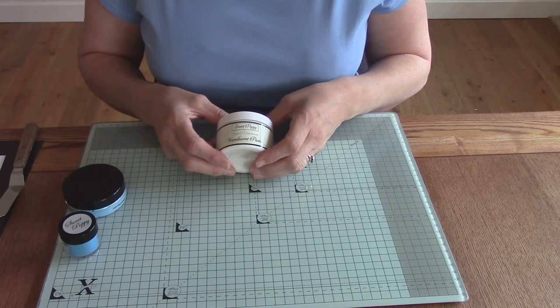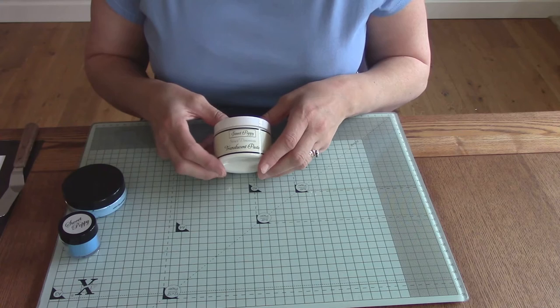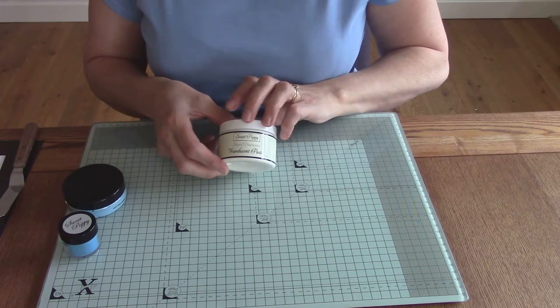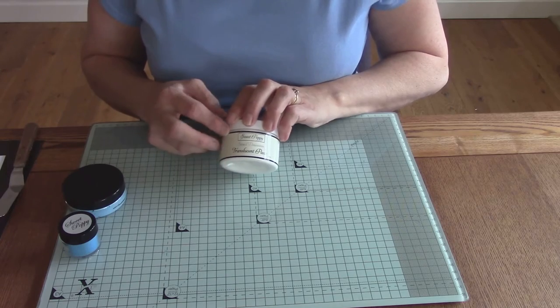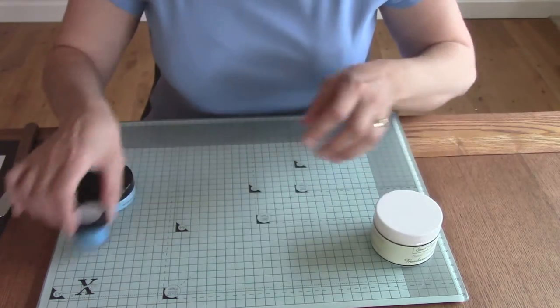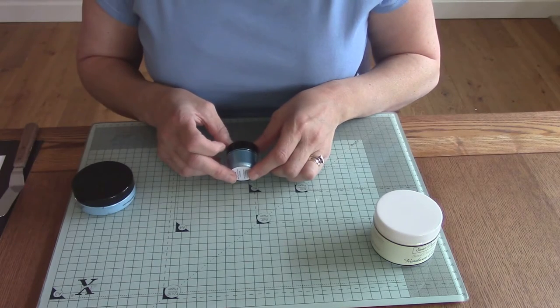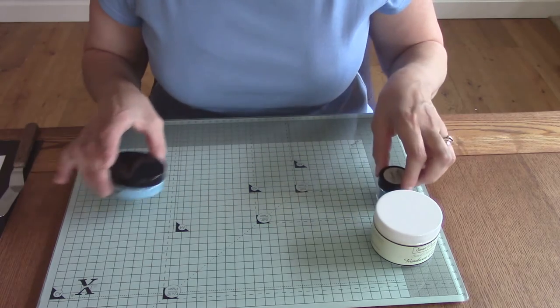The items we're going to use today, first is stencil dimensions translucent paste. This has been designed specifically for our requirements and took about two years to manufacture. We're going to be using the oceans blue mica powders and it's a beautiful vibrant blue, don't be scared of the colors.